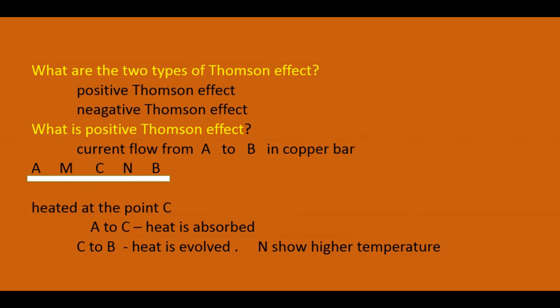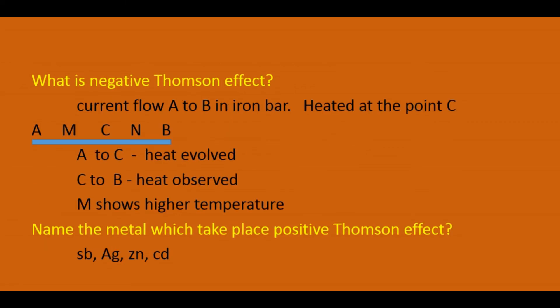For the negative Thomson effect, we take an iron bar where current flows from A to B, heated at point C. From A to C, heat is evolved, and from C to B, heat is absorbed. Here M shows the higher temperature and N shows the minimum temperature. When we change the direction of current so it flows from B to A in the iron bar, N shows the higher temperature and M shows the lower temperature. This is known as the negative Thomson effect.